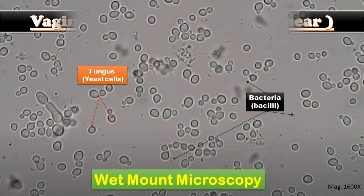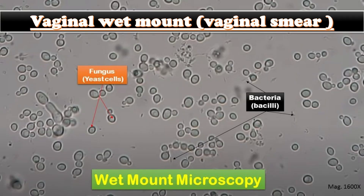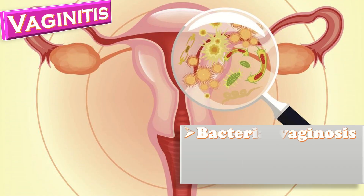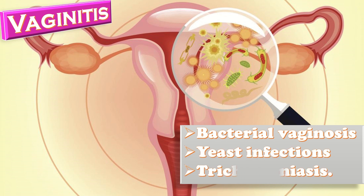Vaginal wet mount, sometimes called vaginal smear, is a test to find the cause of vaginitis or inflammation of the vagina and the vulva. The most common infections which cause vaginitis include bacterial vaginosis, yeast infection, and trichomoniasis.